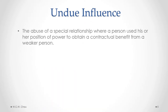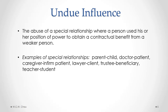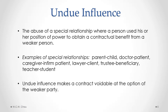The contractual defect of undue influence involves the abuse of a special relationship where a person used his or her position of power to obtain a contractual benefit from a weaker person. Examples of special relationships are parent-child, doctor-patient, caregiver and infirm patient, lawyer-client, trustee-beneficiary, and teacher-student. These are just examples — there can be other types of special relationships as well. Where there is undue influence in the creation of a contract, that undue influence can make the contract voidable at the option of the weaker party, which means the weaker party has the option to cancel the contract.